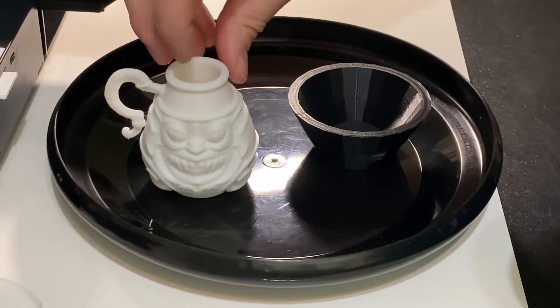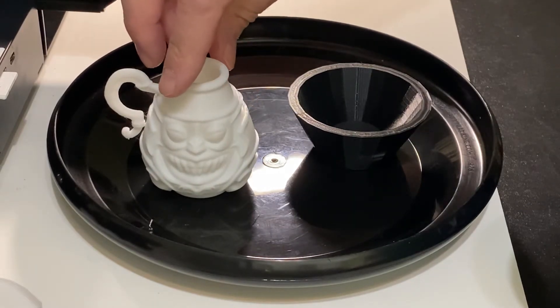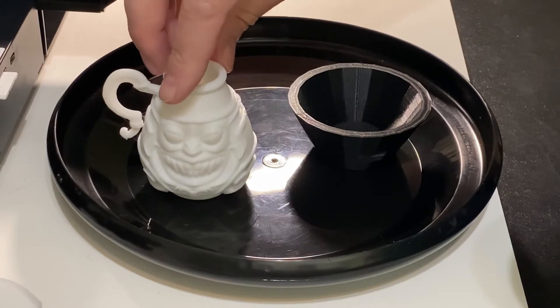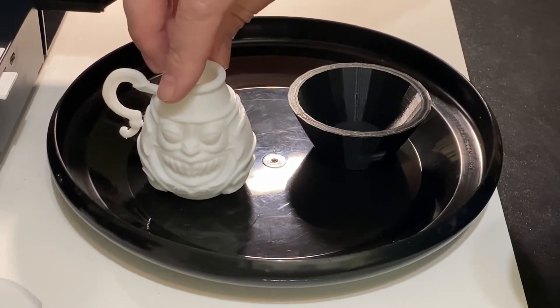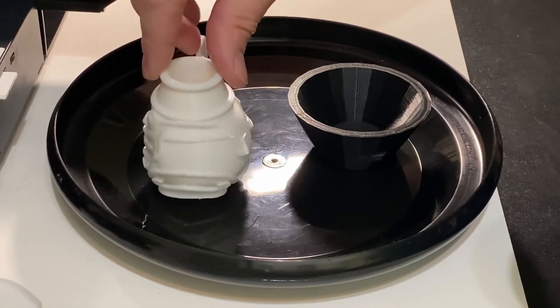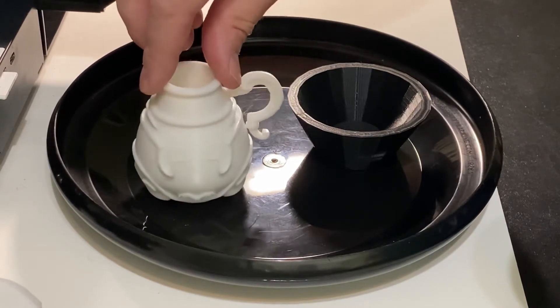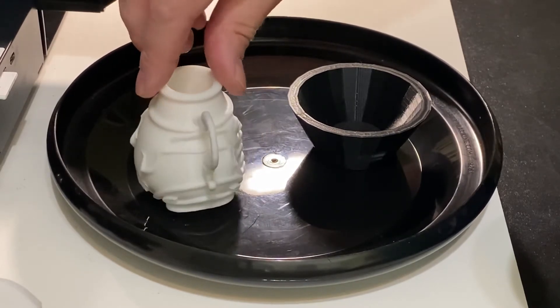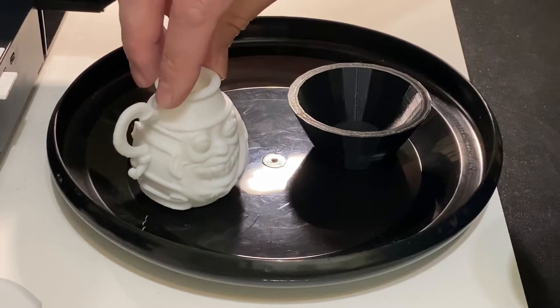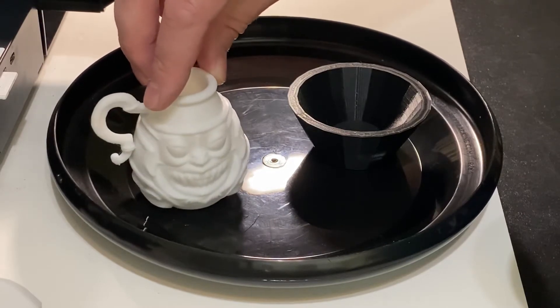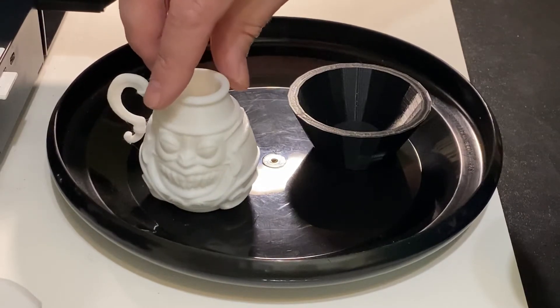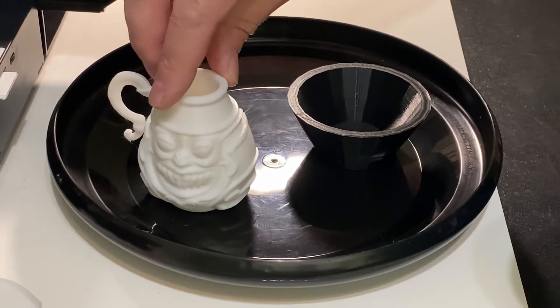This is a little cup made on a Creality 3D printer. This is made with PLA. Now you can't use this as a drinking cup because it's PLA, or at least it's not recommended that you use it as a drinking cup.